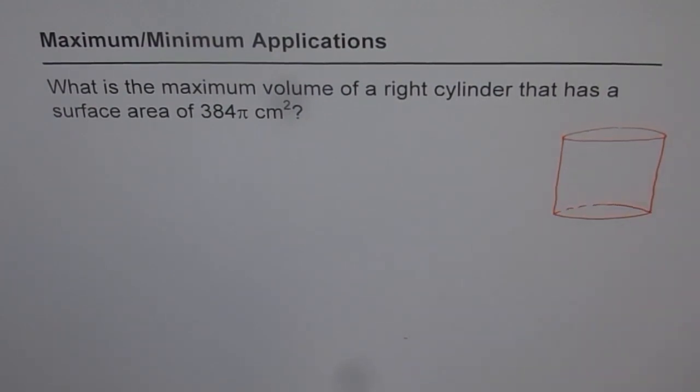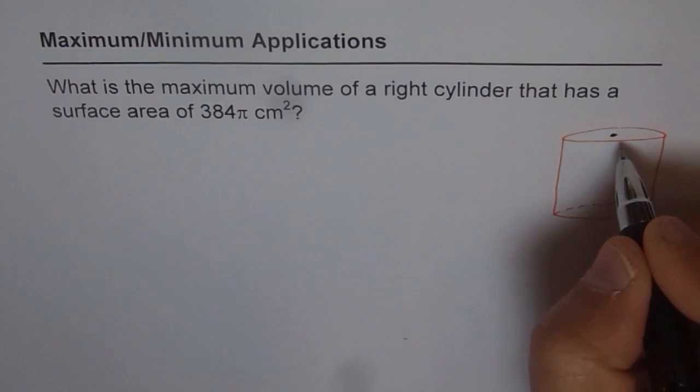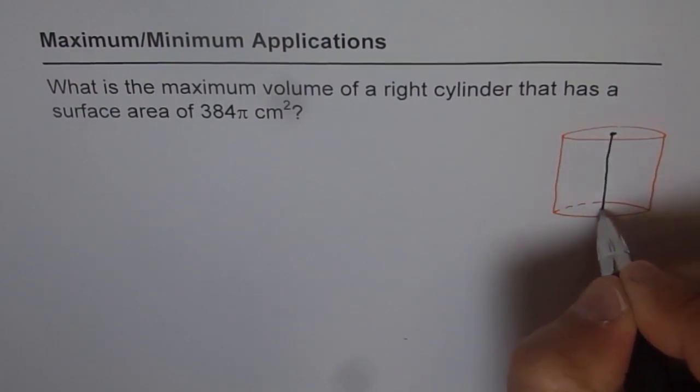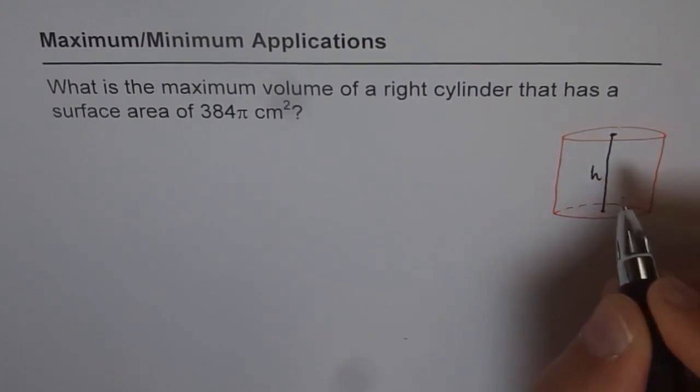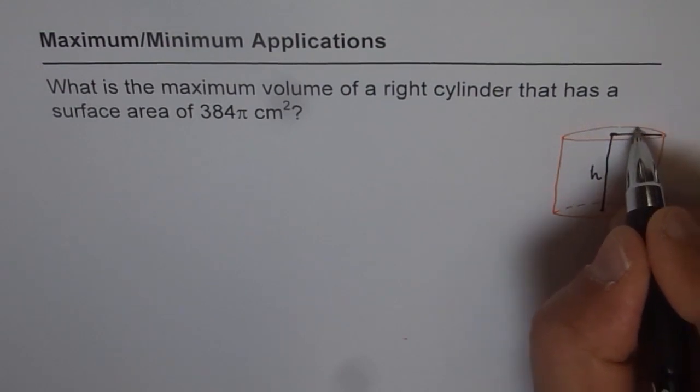Let's say this is our cylinder. In this cylinder, let the radius be r. It's good to define the variables. And the height be h. So this is our height h and this radius is r.